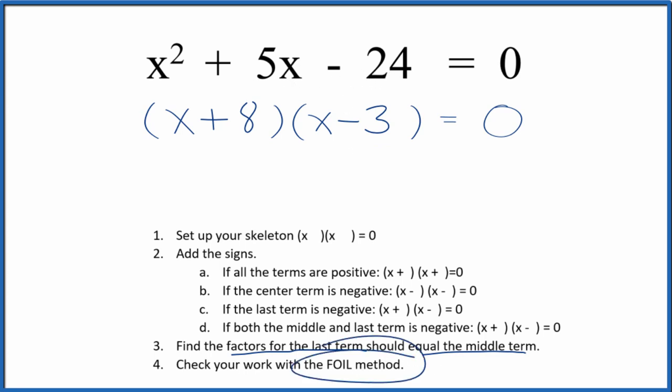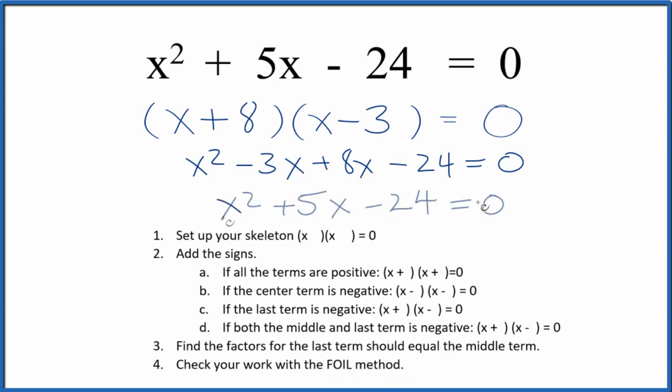But we should check our work with the FOIL method here. So the first term, x times x is x squared. Outside, x times negative 3 is negative 3x. Inside, 8 times x gives us 8x. And then the last term, 8 times negative 3 is negative 24. Let's combine these terms right here. And we get the same thing that we started out with. So by using the FOIL method, we show that we did this part correctly.